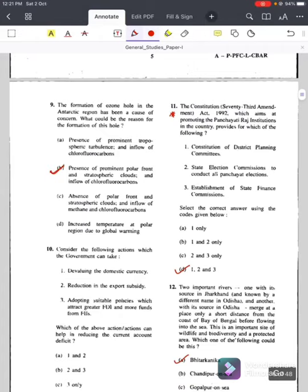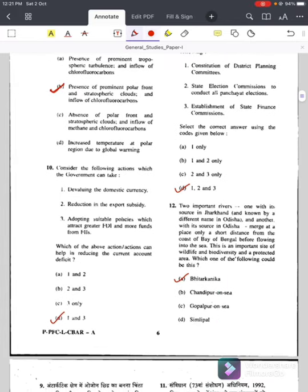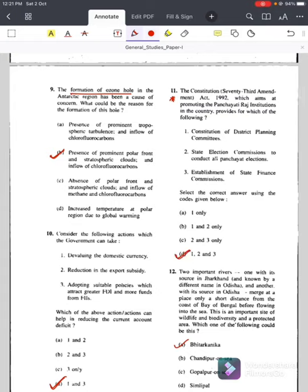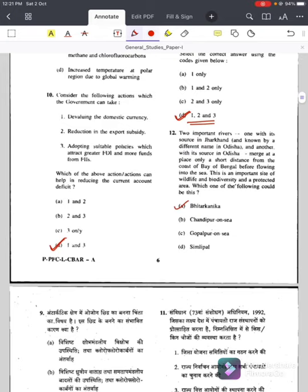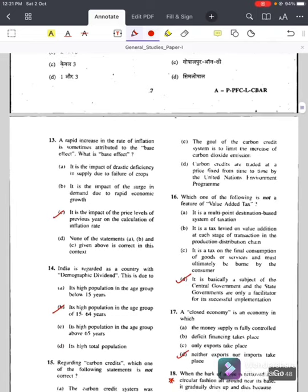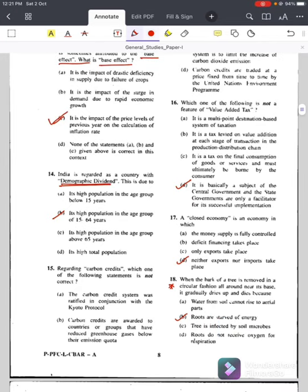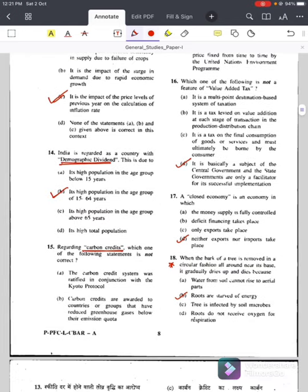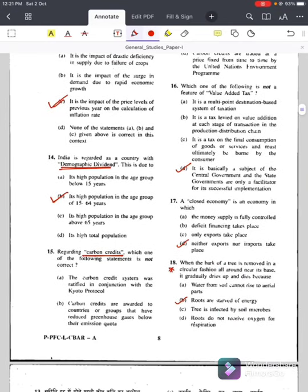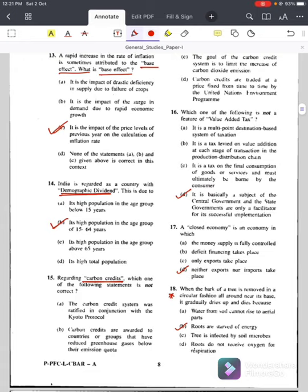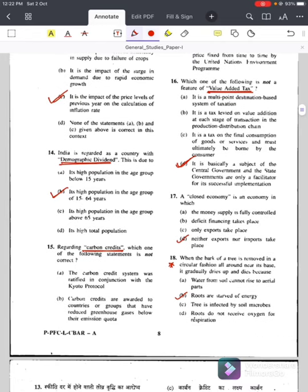Question number nine, formation of ozone hole, answer is B. Question number ten, consider the following actions which government can take, answer is D, one and three. Then constitution related question, answer is D. Constitution, actually it is 73rd Constitutional Amendment Act 1992, answer is D, one two and three. Question number twelve, two important rivers, answer is B. Then question number thirteen, base effect question, answer is C.